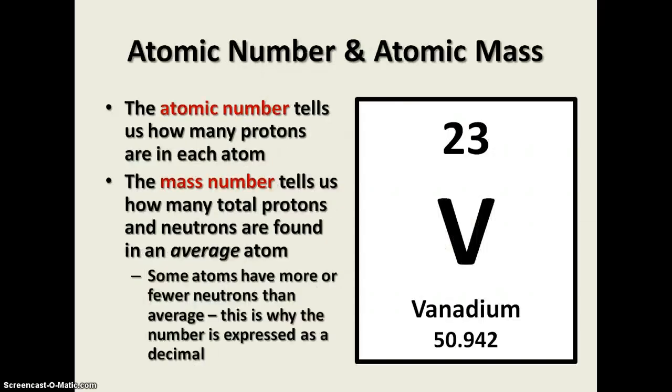When you look at an element box on the periodic table, you see several things there. The atomic number, which is found here at the top, tells us how many protons are in each atom and that's what determines which atom it is. That usually appears either right above or right below the symbol. The mass number down at the bottom tells us how many total protons and neutrons are found in an average atom.